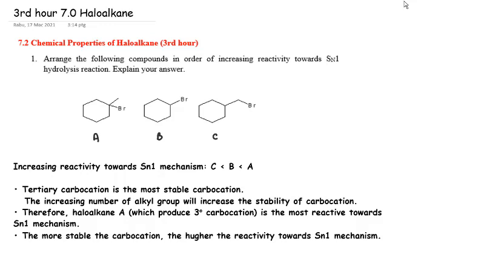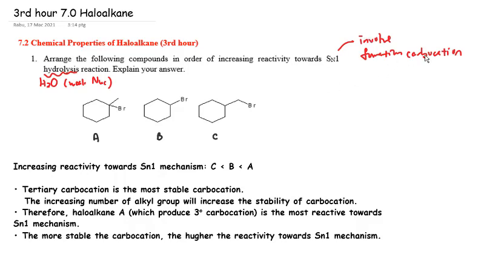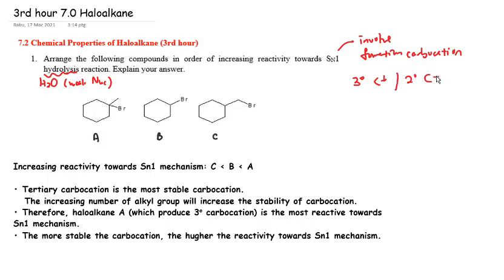For question number one, arrange the following compounds in order of increasing reactivity towards SN1 hydrolysis reaction. Hydrolysis means the haloalkane is reacted with H₂O, which is a weak nucleophile. For SN1 mechanism, it involves the formation of a carbocation, so we prefer to have a tertiary carbocation formed from a tertiary haloalkane, or a secondary carbocation formed from a secondary haloalkane. Let's label the example structures as A, B, and C.